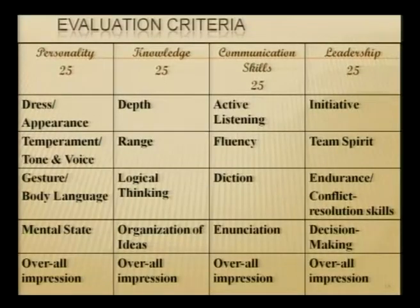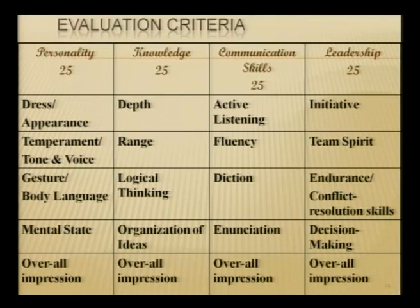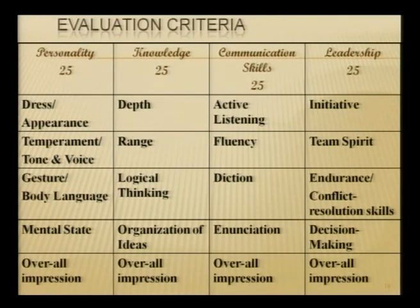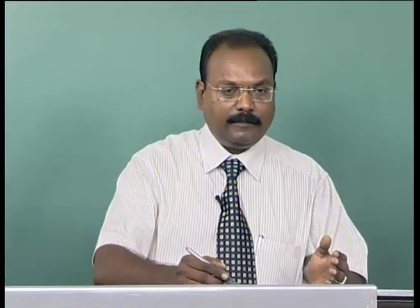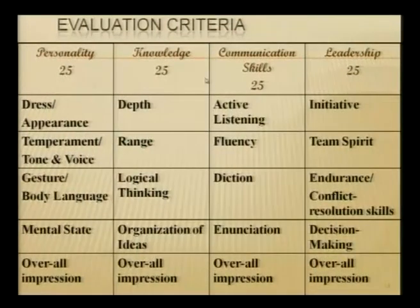These basic components are used for evaluating candidates. Looking at the evaluation criteria: if you put personality, knowledge, communication skills, and leadership — each assessed for 100 marks total — each will get about 25 marks. Personality gets 25, knowledge 25, communication skills 25, and leadership quality 25. Under personality, each sub-category gets 5 points — for instance, dress and appearance is assessed on whether the person has dressed professionally to the occasion.